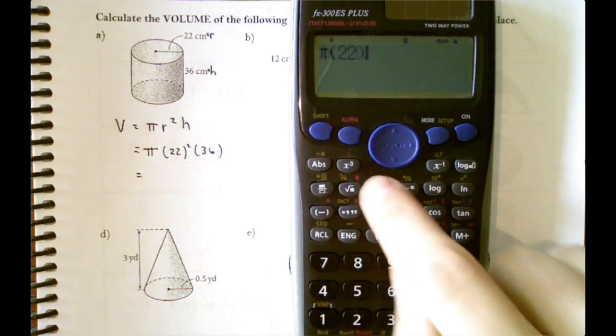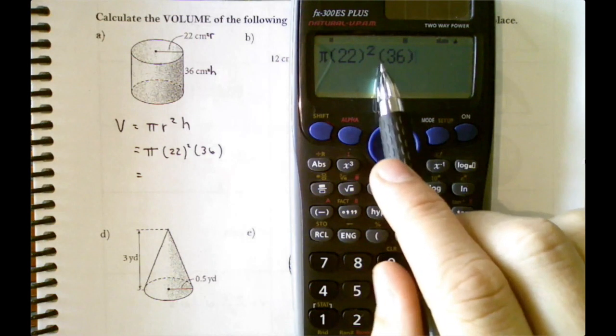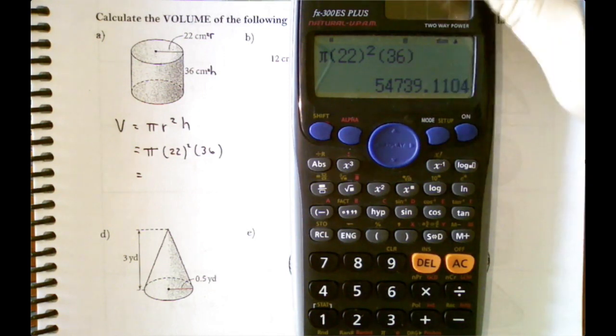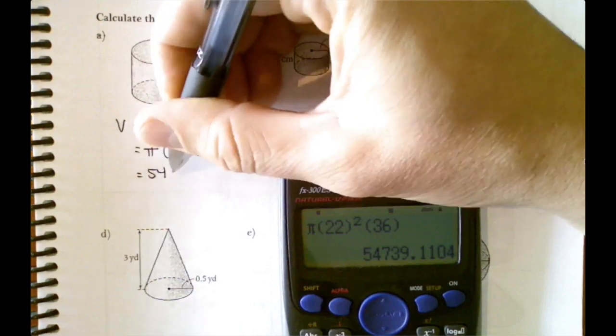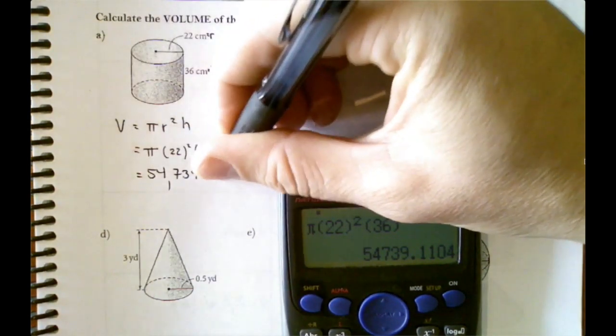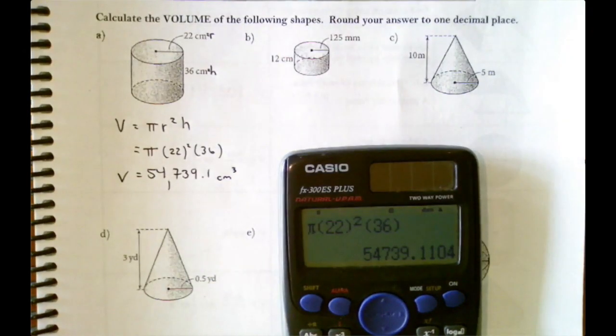Pi 22 squared times 36. If you don't want to use brackets, you can just type times 36 and that would work too. We end up with 54,739.1 and we're in centimeters cubed because we're doing volume. I'll leave the second cylinder for you.